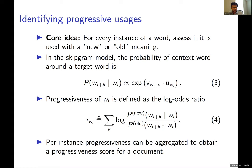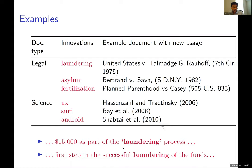Once you have per-instance progressiveness scores, you can aggregate them to obtain progressiveness scores for paragraphs or entire documents. Examples we found in both datasets include words like 'laundering,' 'asylum,' and 'fertilization,' which were used in an innovative way in specific documents — documents that used these words innovatively before other documents started following that usage with a later sense.